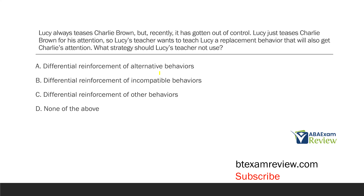Lucy always teases Charlie Brown, but recently it has gotten out of control. Lucy teases Charlie Brown for his attention, so Lucy's teacher wants to teach Lucy a replacement behavior that will also get Charlie's attention. What strategy should Lucy's teacher not use? The question is asking about the strategy she should not use, meaning three of these answer choices are going to be strategies she can use.